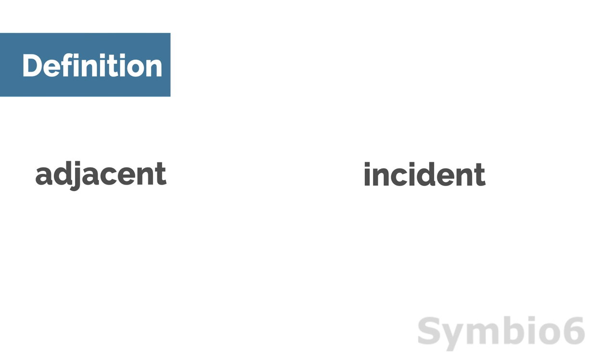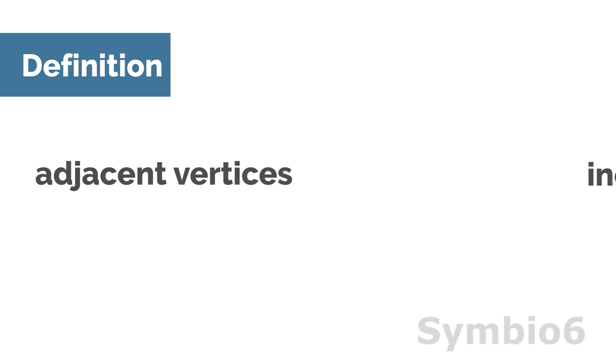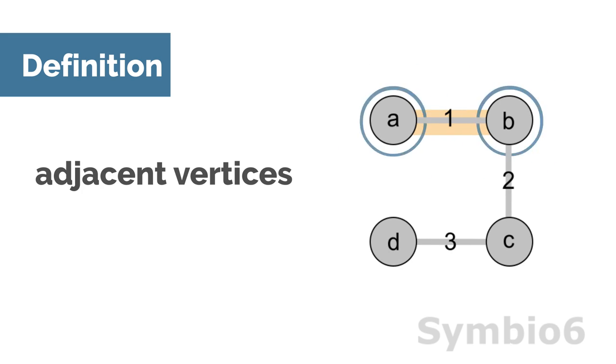Adjacent and incident are often used as synonyms in graph theory. Usually one speaks of adjacent vertices, but of incident edges. However, some say adjacent edges. Vertices are adjacent if there is an edge between these vertices.